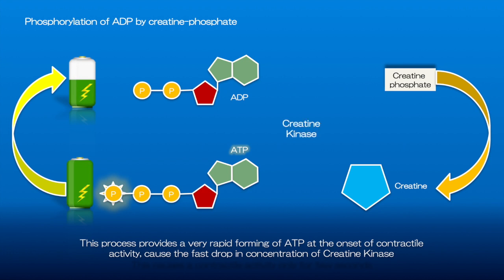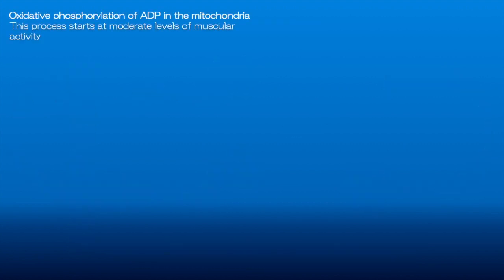This process sustains contractile activity for just a few seconds at the beginning of muscle contraction. At moderate levels of muscular activity, most of the ATP used for muscle contraction is formed by oxidative phosphorylation.